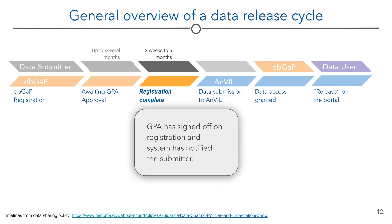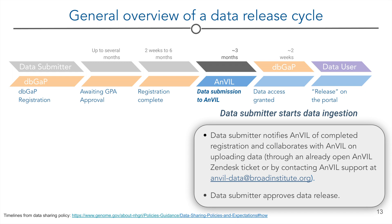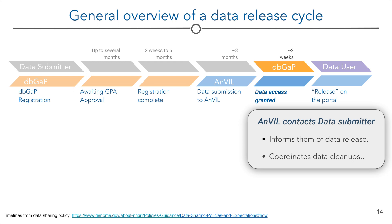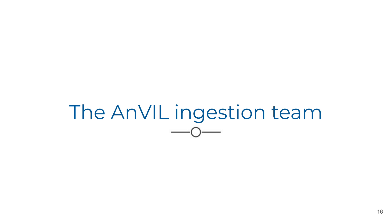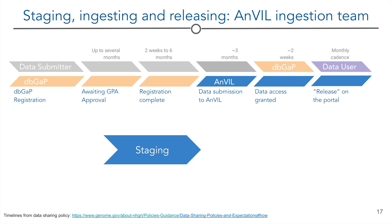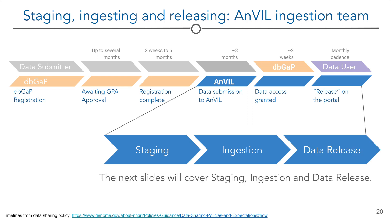Registration is complete once the GPA has signed off on the study and the status is 'completed by GPA.' At this point, the consent groups have been assigned, which is required for data submission to Anvil. This is the point where a data submitter would reach out to Anvil. Once the study is registered in dbGaP, the data submitter contacts the Anvil support team by sending an email to anvildata@broadinstitute.org. This generates a Zendesk ticket for tracking and coordinating the next steps through the lifetime of the release. Next, Anvil tells the data submitter that the data are released and coordinates any data cleanups. The next slides will focus on the three main steps performed with or by the Anvil ingestion team: staging the data, ingesting into TDR, and releasing the data to the research community. Anvil works with the data submitter during staging and release and with dbGaP as part of the release process.